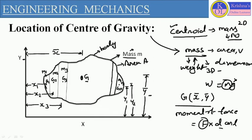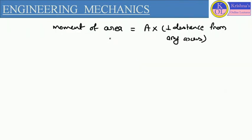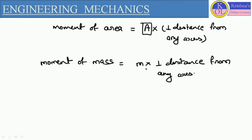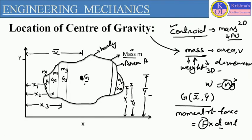Now, here we have to define the position of center of gravity. Center of gravity position we will define by the concept of moment of mass. How we can define the moment of mass? In place of area we will put the value of mass. So moment of mass will be mass into perpendicular distance from any axis. Here, if we want to define the location of g, we have to define the position of x-bar and the value of y-bar. This particular x-bar is represented as the perpendicular distance of point g from the y-axis. If we want to define the perpendicular distance from the x-axis, it will be y-bar.